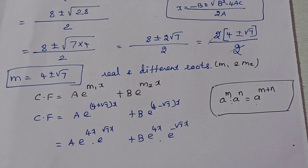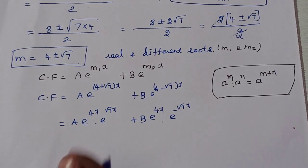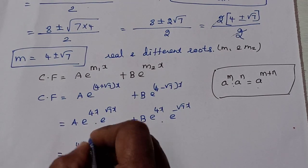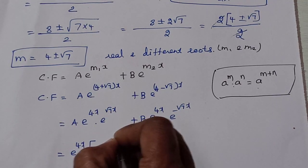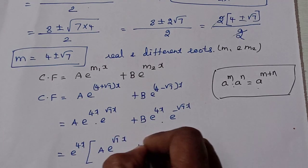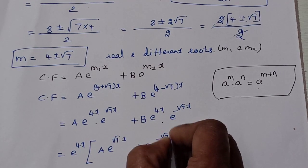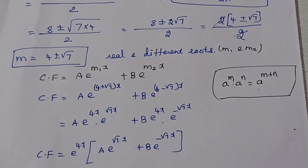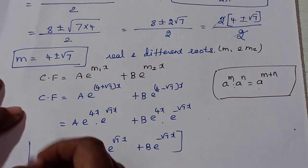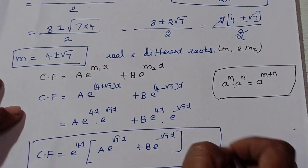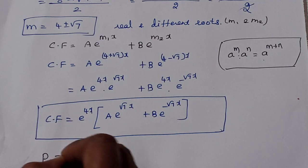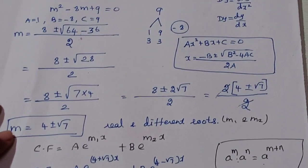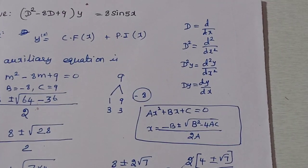Using the exponential product rule a^m · a^n = a^(m+n), the complementary function can be rewritten as e^(4x) times [A·e^(√7·x) + B·e^(−√7·x)]. Now for the particular integral: given f(D)·y = Q(x), the particular integral is 1/f(D) applied to Q(x).